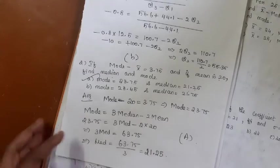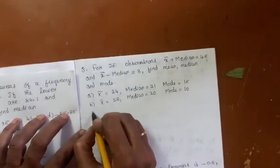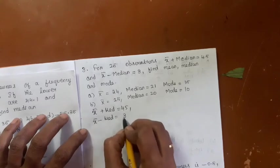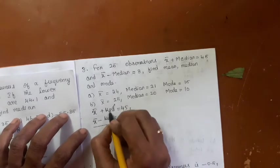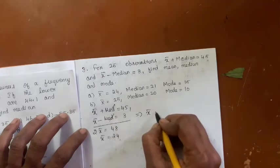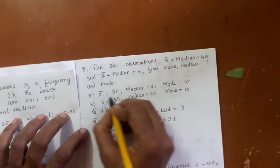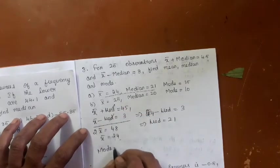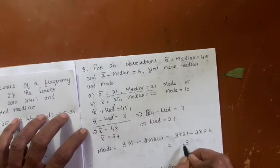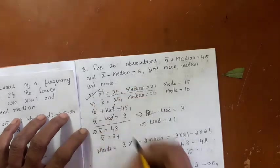Problem: For 25 observations, x-bar plus median = 45 and x-bar minus median = 3. Adding the two equations gives 2 × x-bar = 48, so mean = 24, and median = 21. Using mode = 3 × median − 2 × mean: mode = 3 × 21 − 2 × 24 = 63 − 48 = 15. Option A is the right answer.